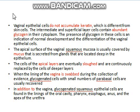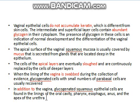Vaginal epithelial cells do not accumulate keratin, which generally happens in skin cells, so they are differentiated from skin cells based on the presence of keratin. A second difference is that glycogen is present in the cytoplasm in abundance compared to other cells. Glycogen is also present in cells lining the oral cavity, pharynx, esophagus, anus, and the apex of the urethra, but the major amount is present in the cytoplasm of vaginal epithelial cells.